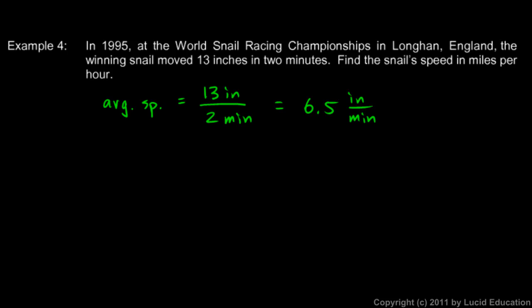We want to convert that to miles per hour. So I start by writing down 6.5 inches per minute, the thing that I want to convert to something else. I always start by writing that down, and then I multiply by a fraction equal to 1.